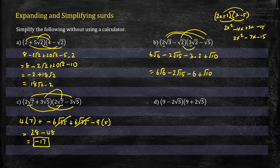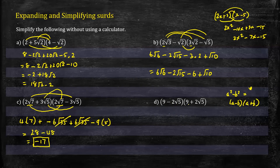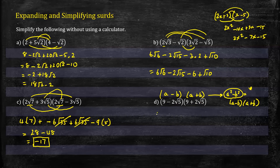Questions c and d can be done using the difference of squares rule, which states that a squared minus b squared equals (a - b)(a + b). This is the quickest way to do these kinds of problems. Notice the numbers: you've got 9 minus 2√5 and 9 plus 2√5 — this is exactly the form (a - b)(a + b), which expands to a squared minus b squared. So we don't have to use the long method.